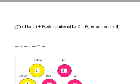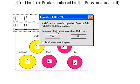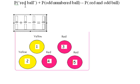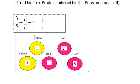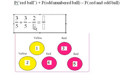The probability of drawing a red ball is 3 out of 5. The probability of drawing an odd numbered ball — there are 3 odds out of 5 — so that's 3 out of 5. The probability of drawing a red and odd ball: there are 2 such balls out of 5, so that's 2 out of 5. Adding 3/5 plus 3/5 minus 2/5 gives 4 out of 5. So the probability of drawing a red ball or an odd numbered ball is four-fifths.